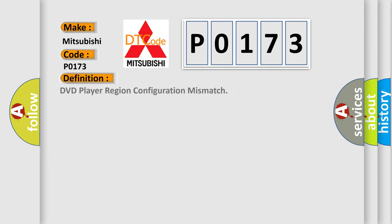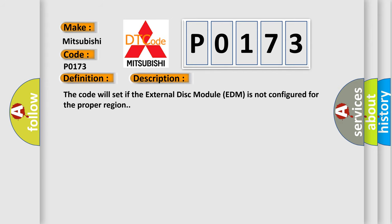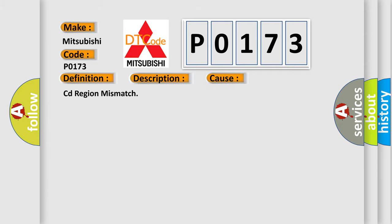The basic definition is: DVD player region configuration mismatch. This is a short description of this DTC code. The code will set if the external disk module (EDM) is not configured for the proper region. This diagnostic error occurs most often in these cases: CD region mismatch.